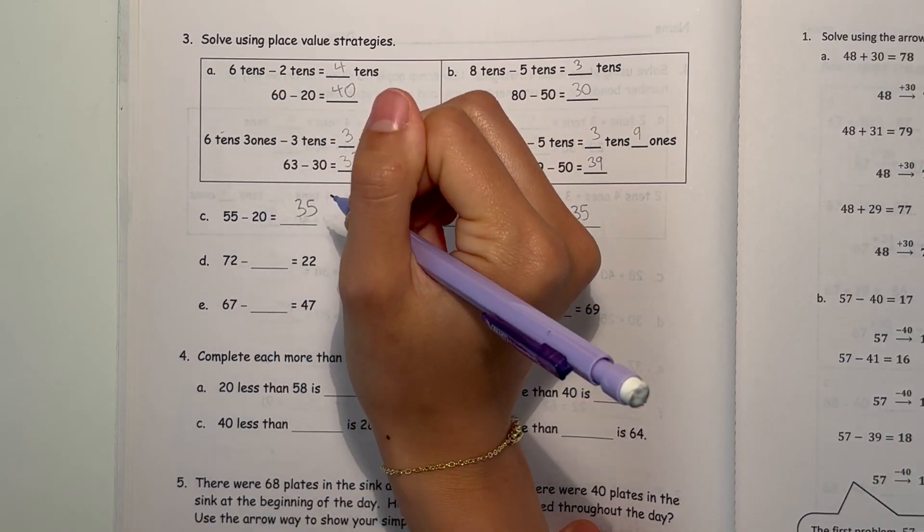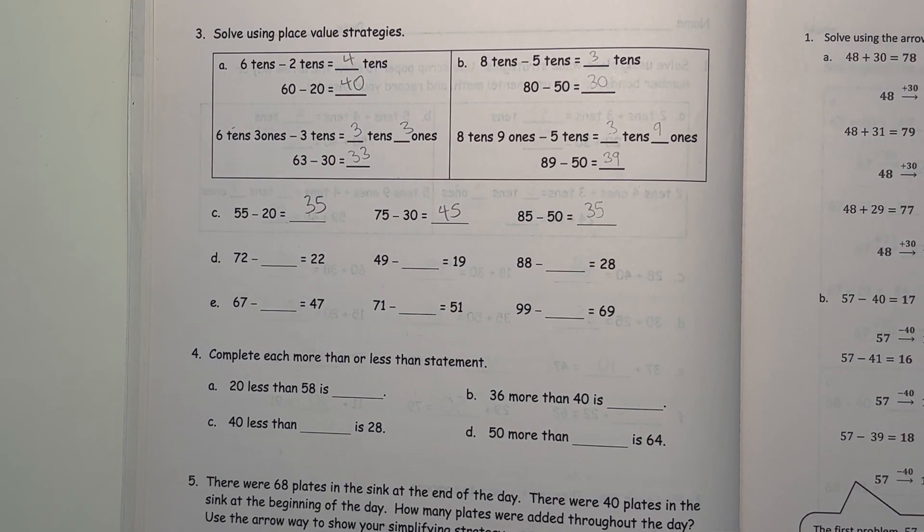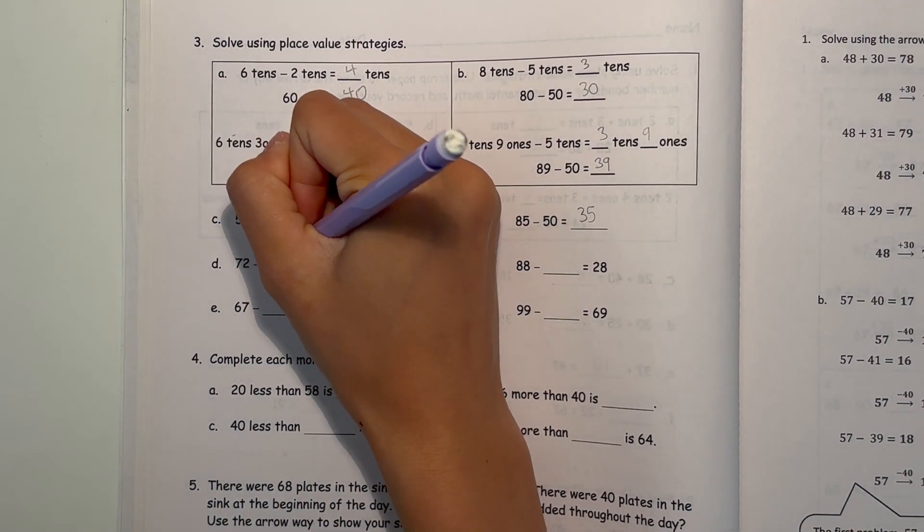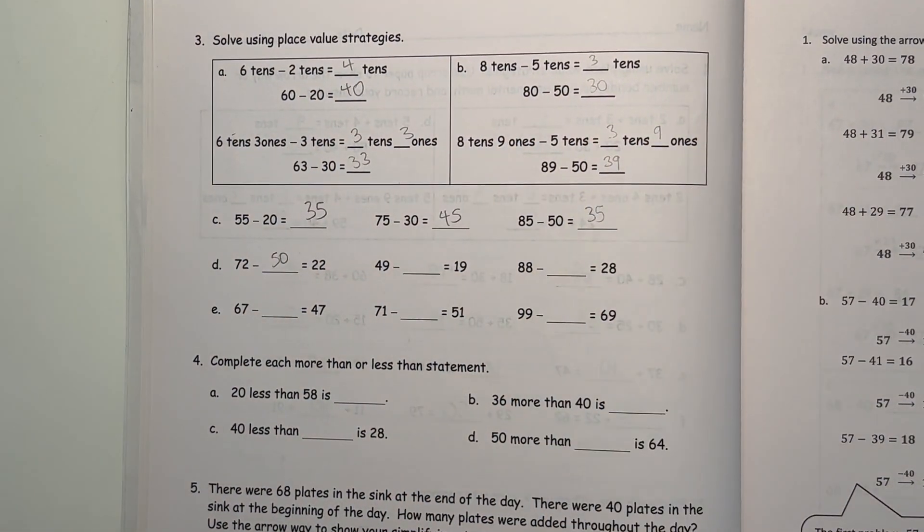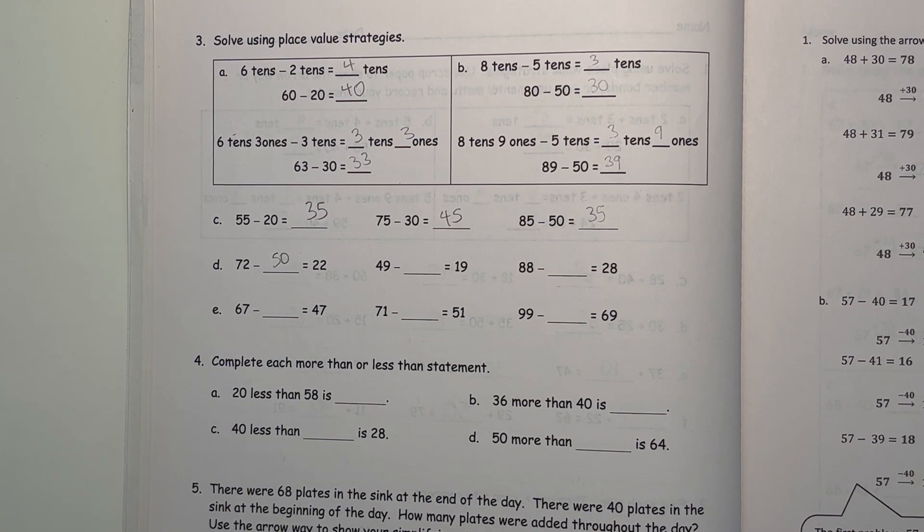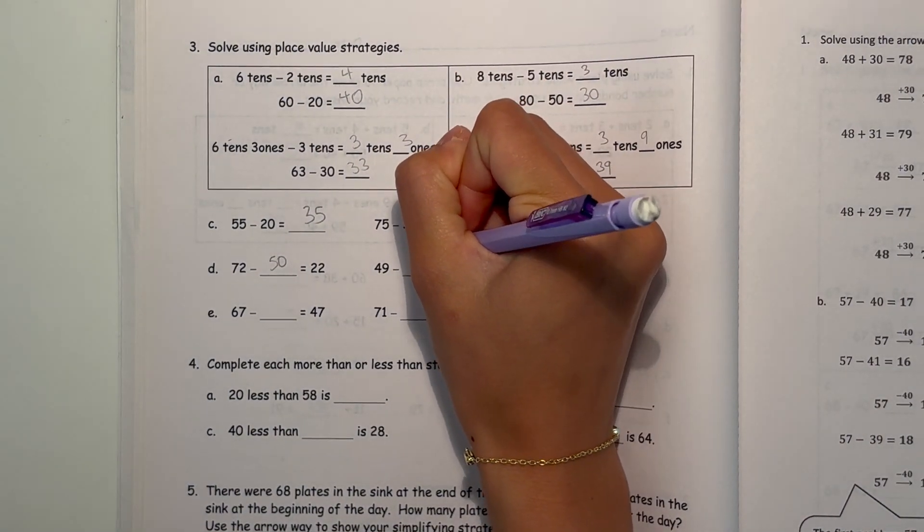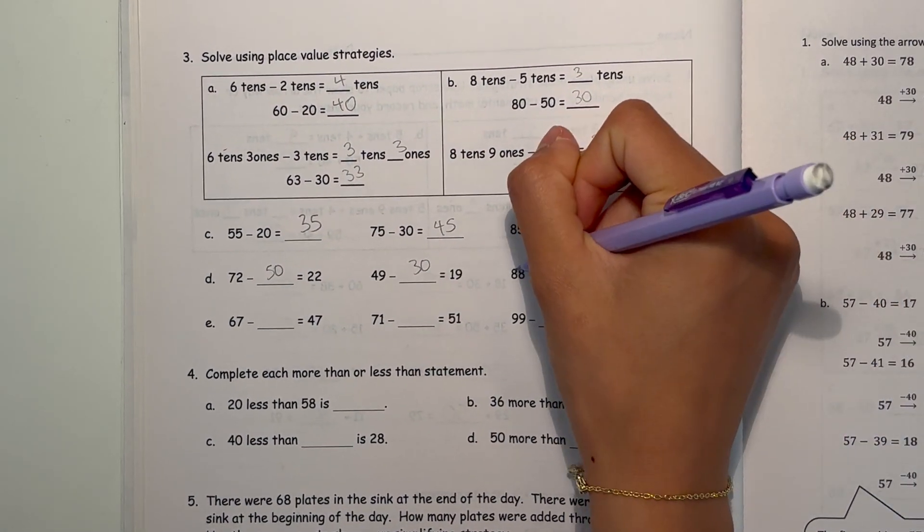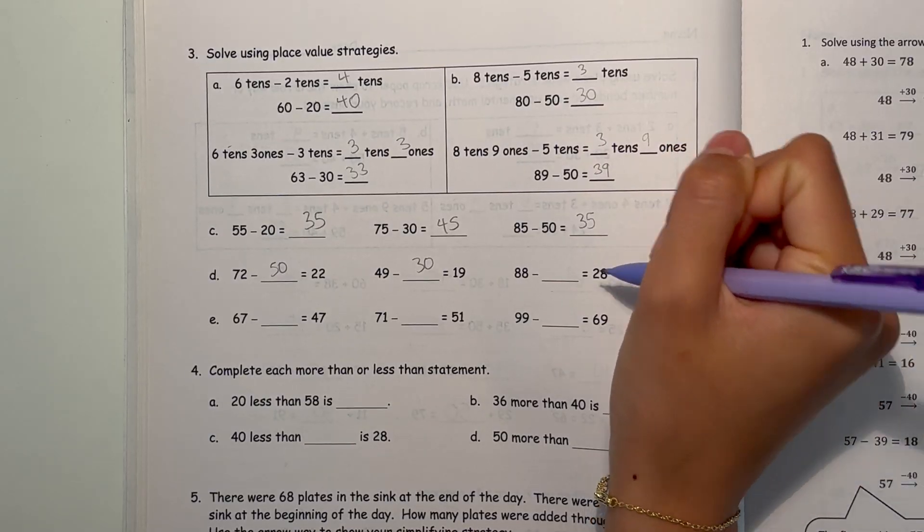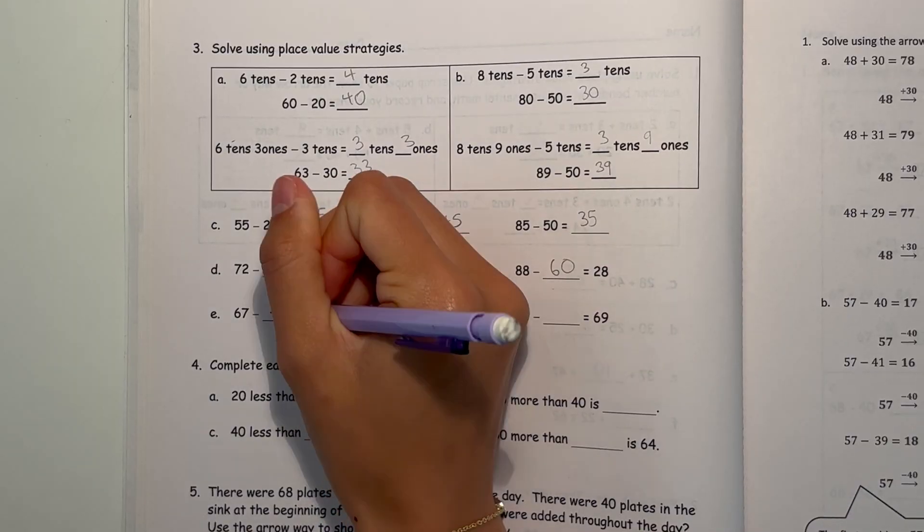72 minus, what is 22? So 72 minus 5 tens, 50 is 22. If 49 minus blank equals 19, well, it's 49 minus 19, that's 30. So, that means 49 minus 30, that's 19. And 88 minus 28, that's 60.